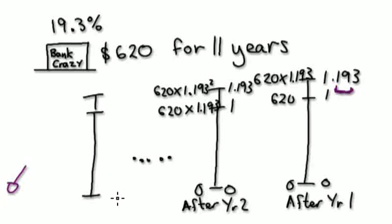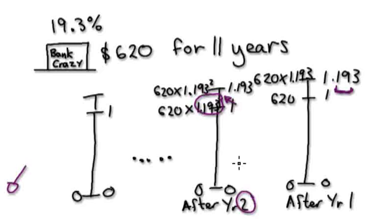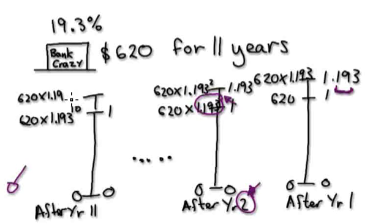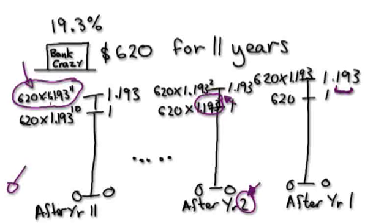Year 11 would look something like this. Remember, year 2 is to the power of 1 really, and if you look at the power, it's 1 less than the year. After year 11, the power will be 1 less, so it will be to the power of 10. This would be my original — 620. So at the end of year 11, we should have 620 times 1.193 to the power of 11. So let's put this in — this would be your final answer. Punch this into your calculator and it should give you a number.